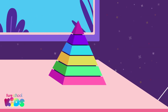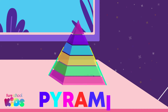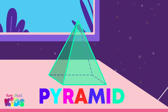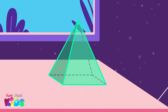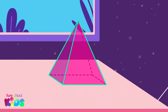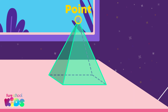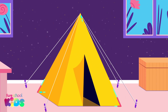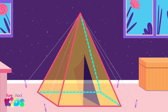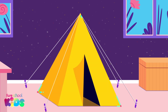Look, there's a new 3D shape! This toy is a pyramid — let's say it together: pyramid! A pyramid has flat triangle faces that come together to make a point, and there is a square face at the bottom. My tent is a pyramid too.